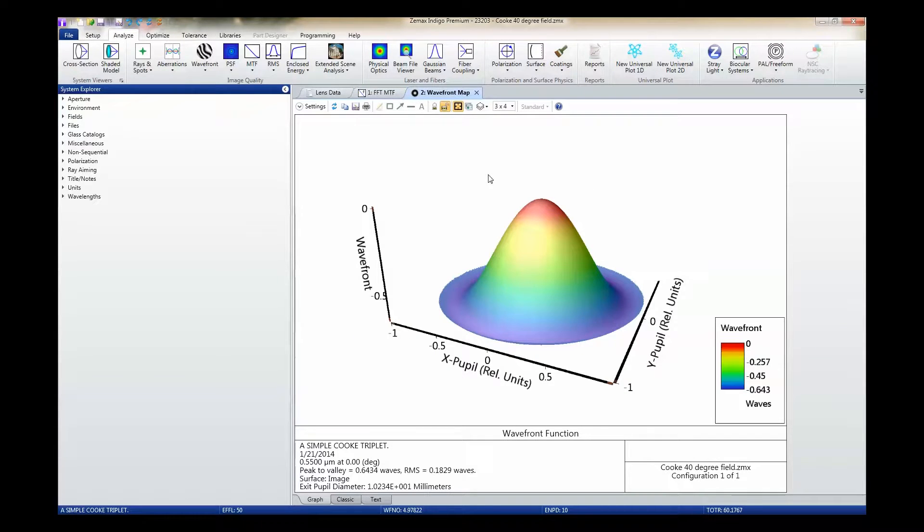An example of 3D data are shown here with the wavefront map. Quantitative data from this surface may again be obtained using the active cursor. In this case, we get not only x and y data, but z data as well, so we're able to read the height directly off this surface plot.